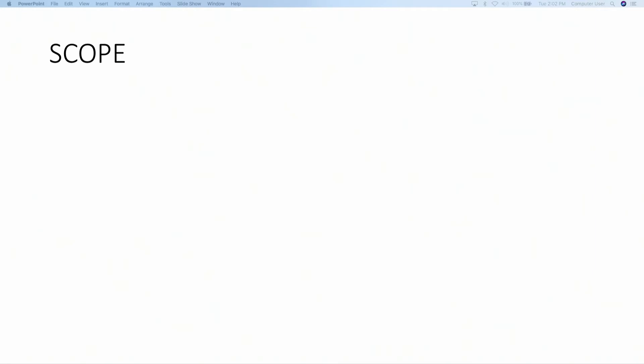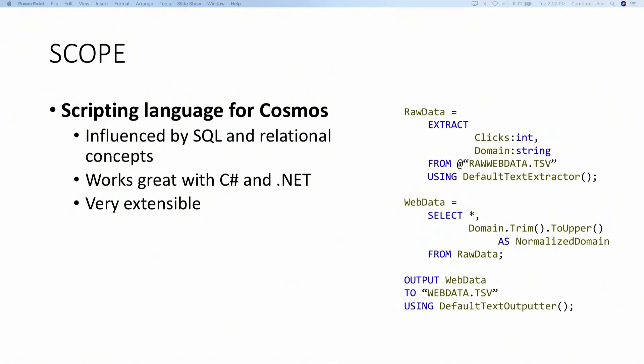So what is Scope? Scope is pretty much the scripting language for Cosmos. This is our main analytical workload running on our clusters today. We've been in the journey of upgrading Cosmos to YARN, and we are now seeing other workloads like Spark mushrooming in different clusters, but Scope continues to be the main one for us. Scope is influenced by SQL, works very well with C# and .NET, and is very extensible, so you can use your favorite .NET library in a reducer, processor, or operator.